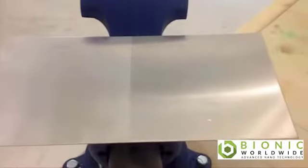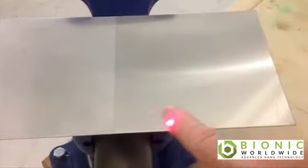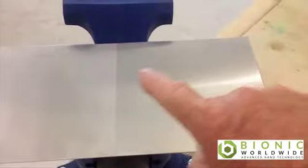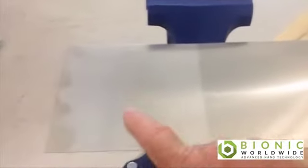You can see here the right side of the aluminum has our coating. You can see how it actually improves the appearance, and then on the left side is just a piece of aluminum with no coating.